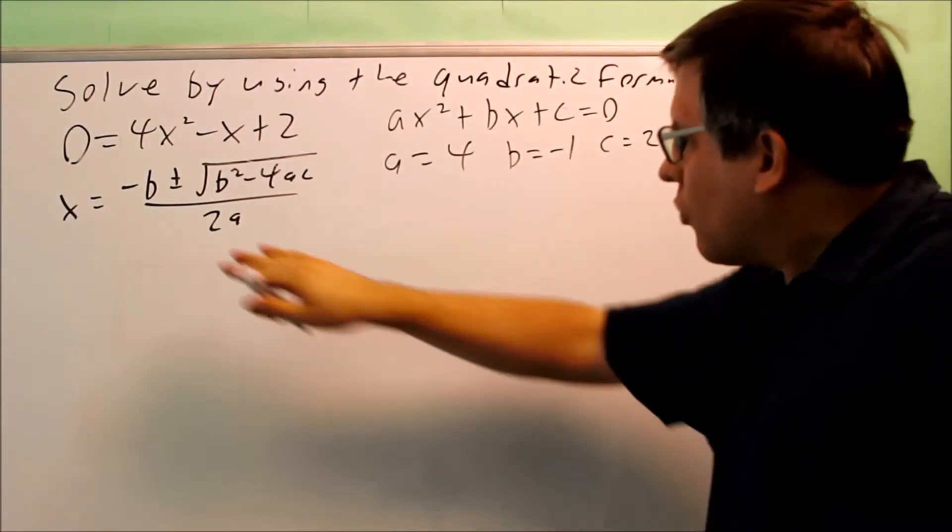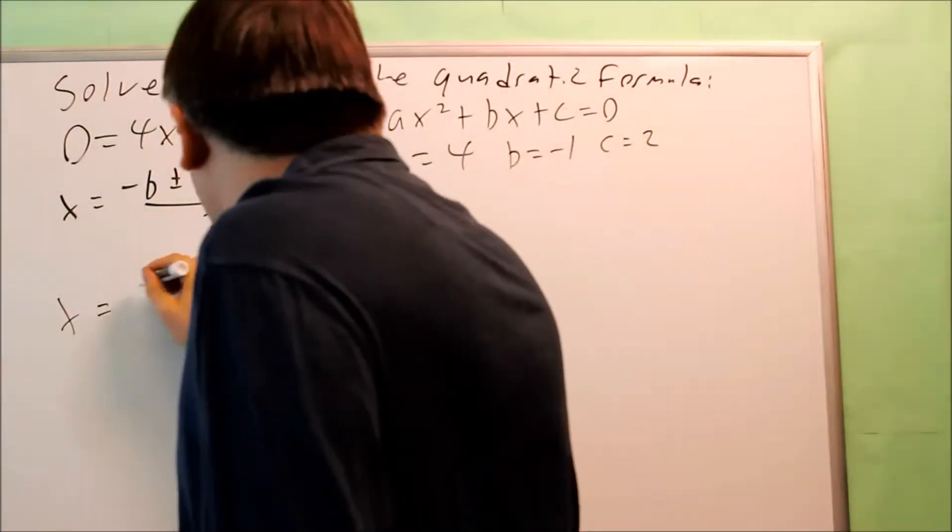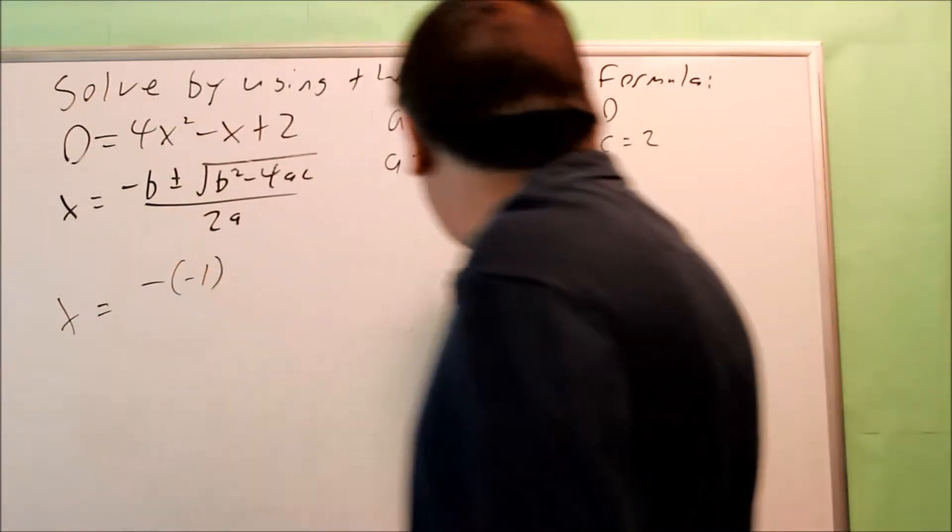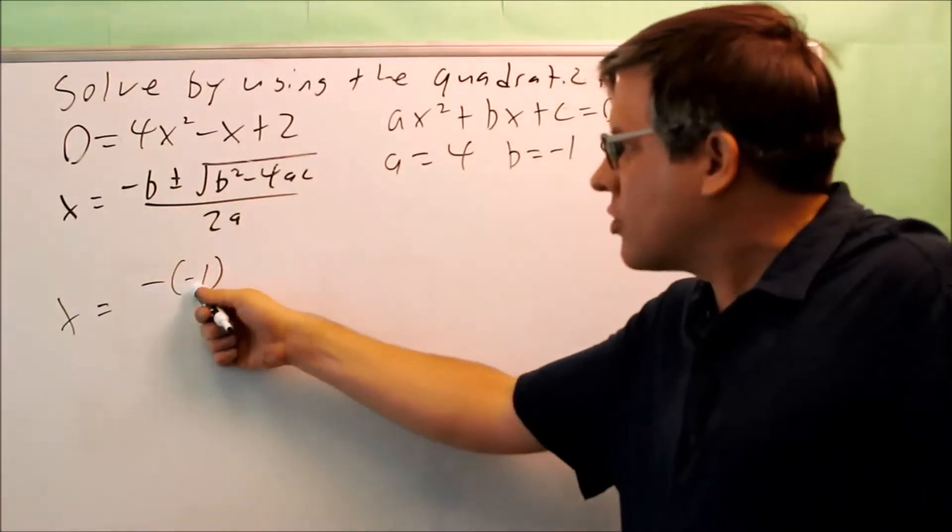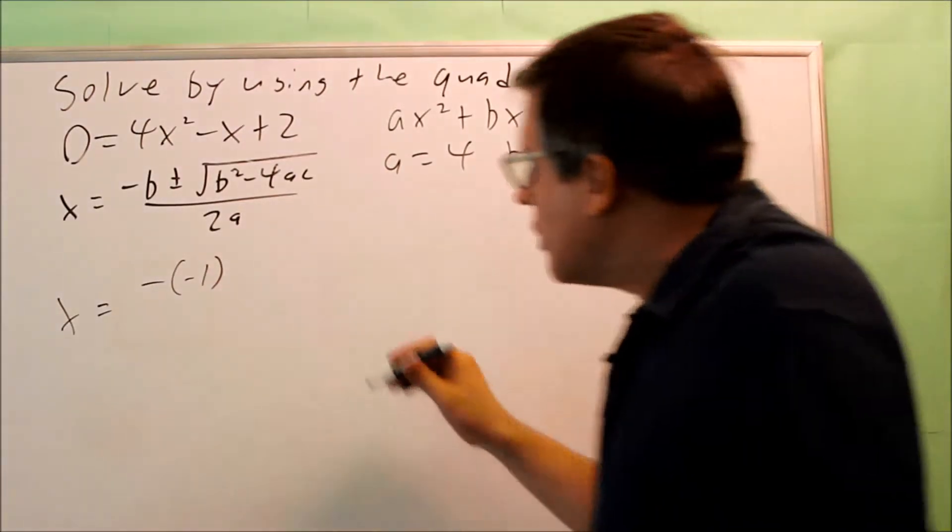So these are the values that we put into the quadratic formula. Here it goes. We have negative. Now be careful with this because B is negative. We have a negative for the formula, and also a negative 1 goes in there as well. So you've got a double negative that you have to be careful with.